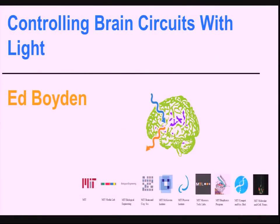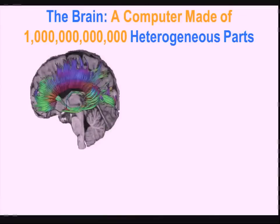I'm going to tell you a couple of stories today about our attempts to use light to program information into the brain, and what we think we can do with it — both from a basic science standpoint, to understand the principles of how the brain works, and also from a clinical standpoint. I'll show you some preclinical work we're doing to see if we can treat brain disorders through beaming information into brain targets with light.